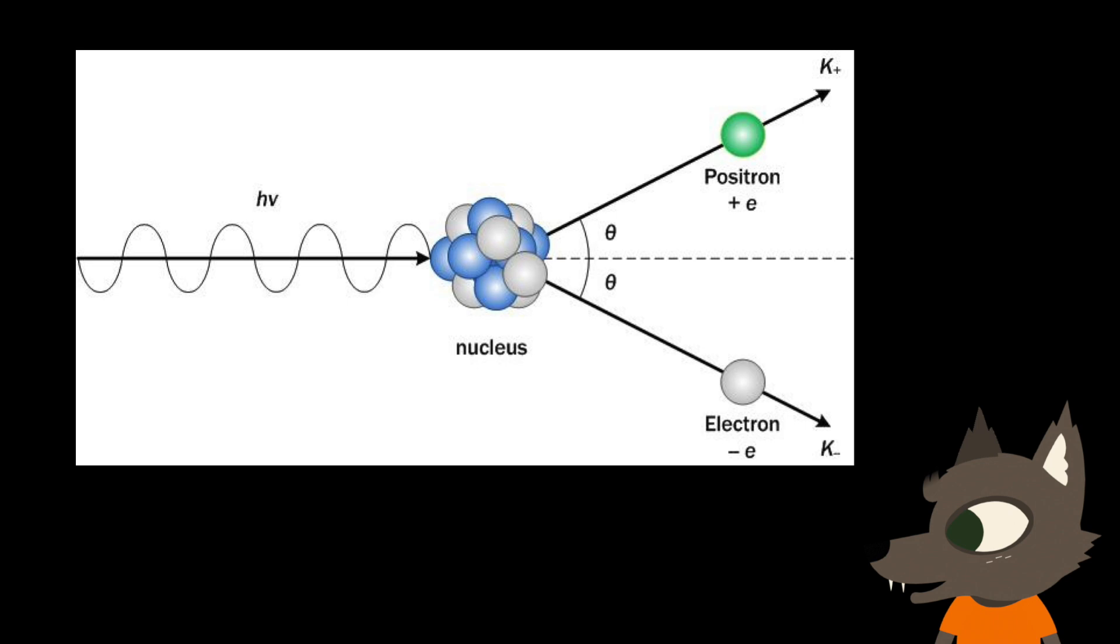I've been attempting to make positrons in this way by passing the 2.6 mega-electron volt gamma rays emitted from a thorium oxide source through a 1 mm thick lead plate, but I haven't had any success with this method yet.